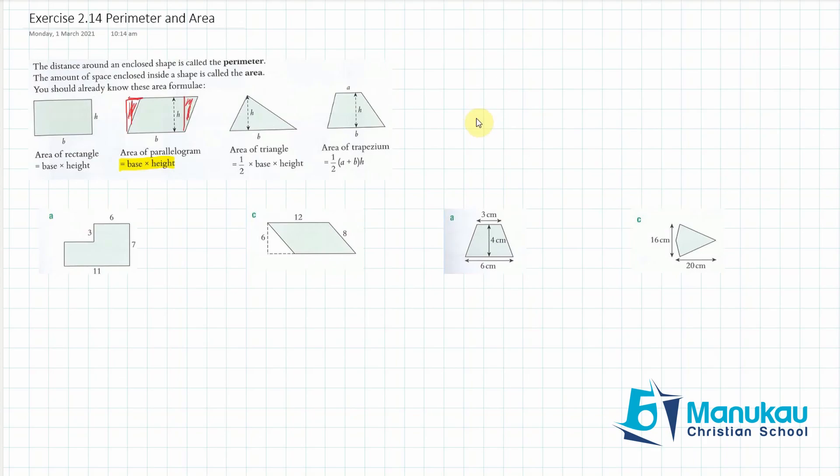Okay, now, the area of a triangle, you also know half base times height, so that's fine, and area of a trapezium, I think, also is familiar to most of you. It's half times the sum of your parallel sides, a and b, multiplied by the perpendicular distance between them, or the height. So be aware that this is a height, the perpendicular distance, but these lines on the side here are not heights, because they're not perpendicular.